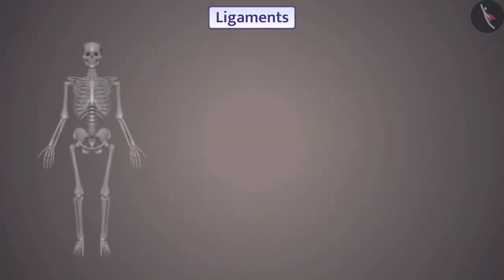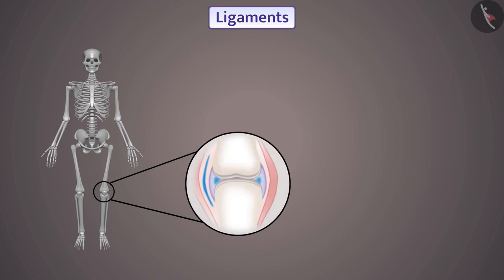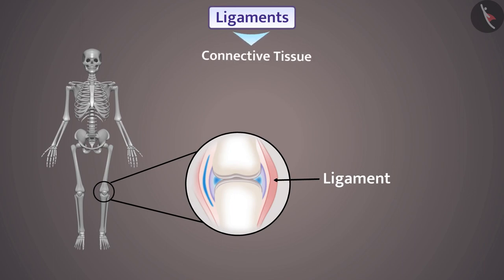The two bones are connected with each other by the ligament, therefore ligament is also a type of connective tissue. There is very little matrix in the ligament that connects bone to other bones. Ligament is very elastic and strong.